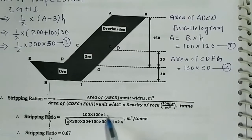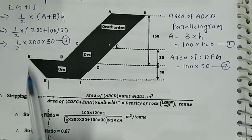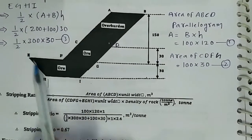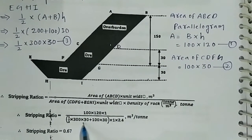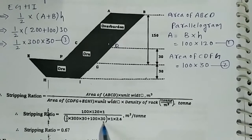Into 1 is the unit width of the parallelogram, divided by half into, from third equation, half into 300 into 30, plus from second equation, 100 into 30.